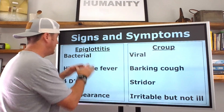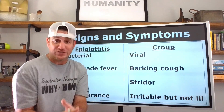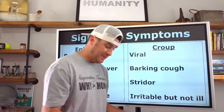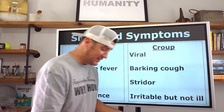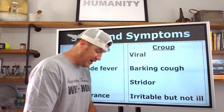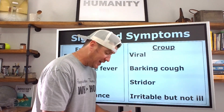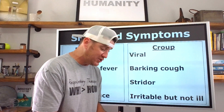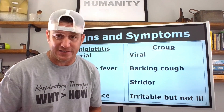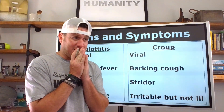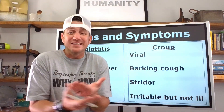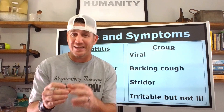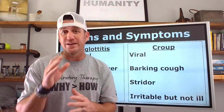Now, back on topic — epiglottitis versus croup. The first thing you're going to have to be able to do is differentiate which is which. I'm referencing chapter 35 of Egan's 13th edition, page 711. It states that the evaluation and treatment of a child with croup must focus on distinguishing it from other disorders such as epiglottitis. So we realize they're not the same, but they can easily be confused if we're not on our toes.